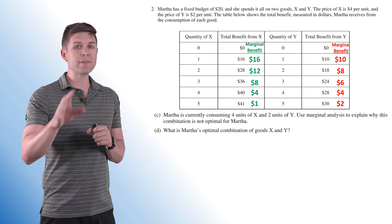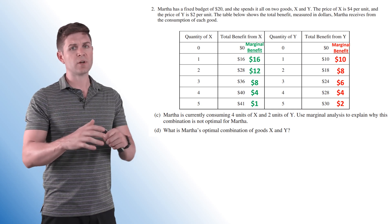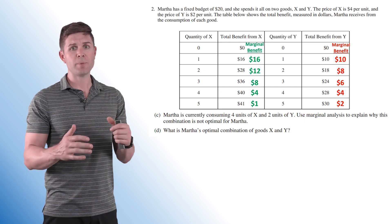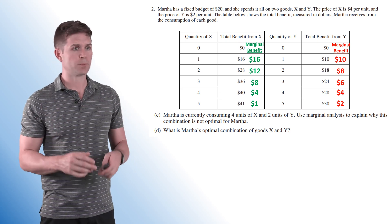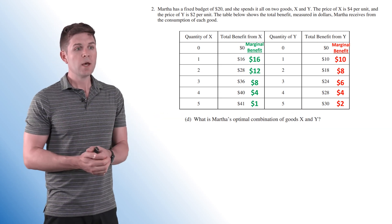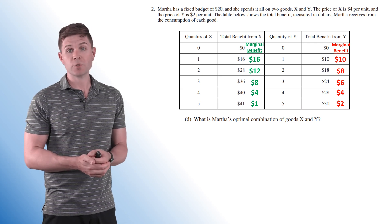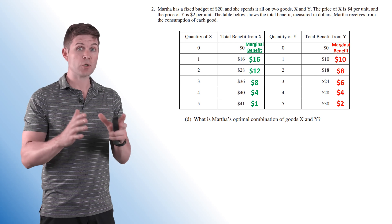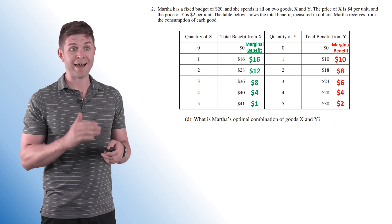All right, now on to question C. Now in this case, question D is a much longer question to answer. We have to do a lot more work. And question C isn't too bad, but I want to flip flop these for explanation purposes. So let's start with D. What is Martha's optimal combination of goods X and Y? In this case, we need to figure out what the per dollar marginal utility is for both goods X and Y.